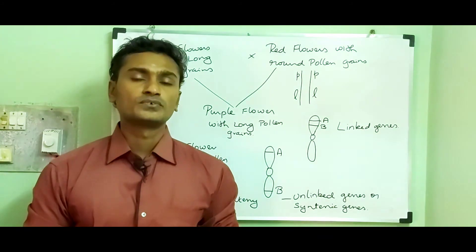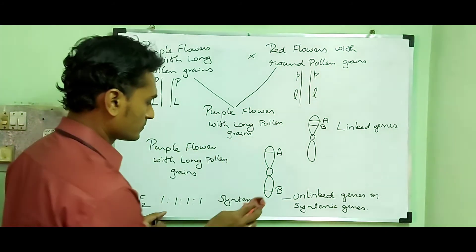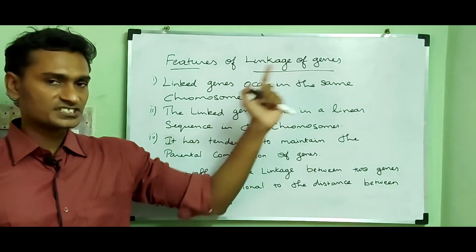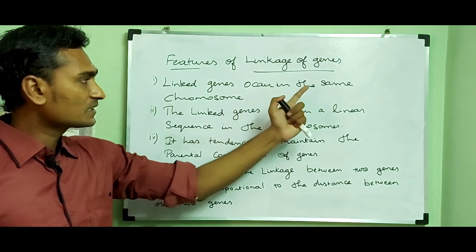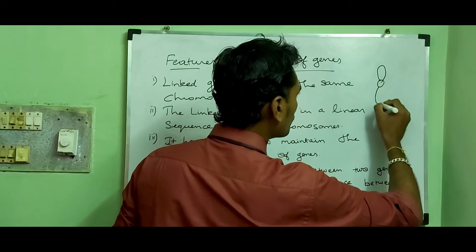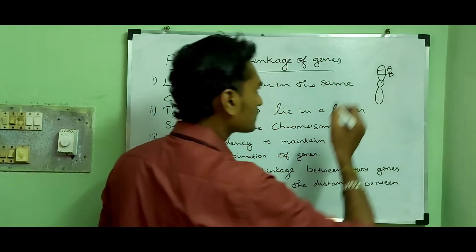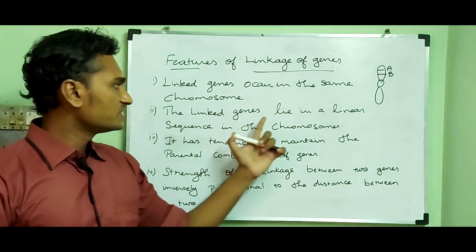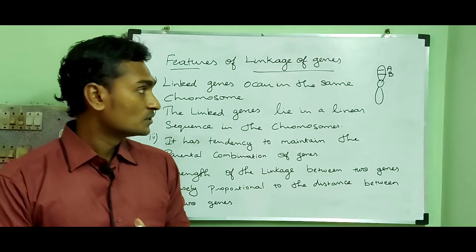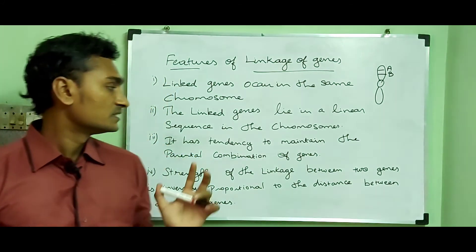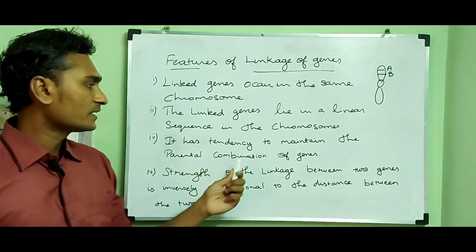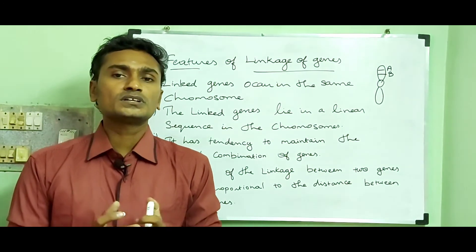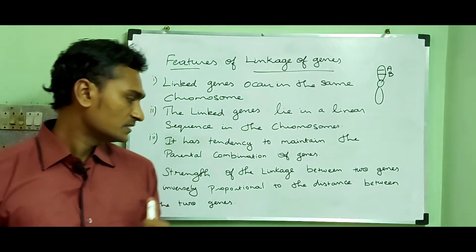The important characteristic features of linkage are: first, linked genes occur on the same chromosome, closely arranged together. Second, linked genes lie in a linear sequence in the chromosome. Third, there is a tendency to maintain the parental combination of genes, so the F2 generation shows more parental combinations due to linked genes.